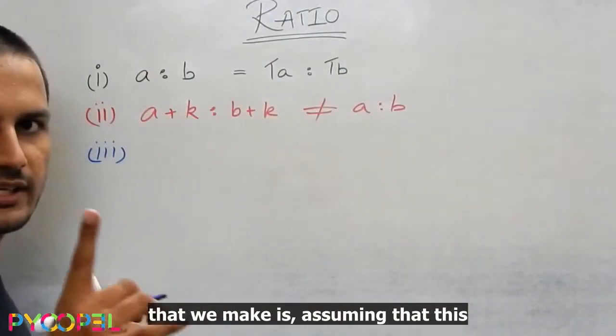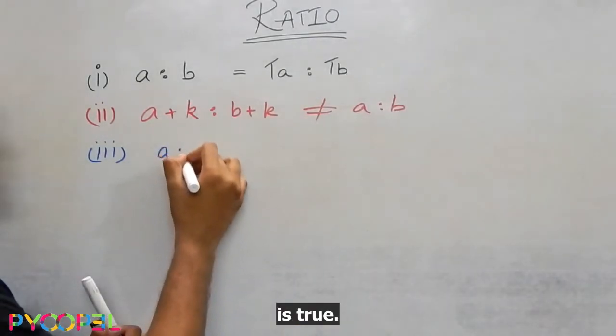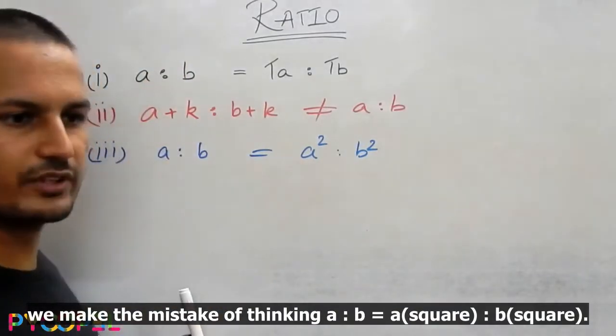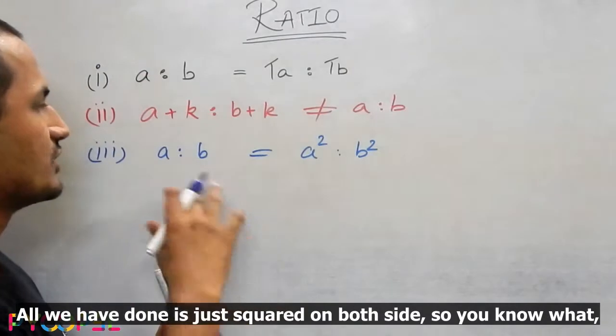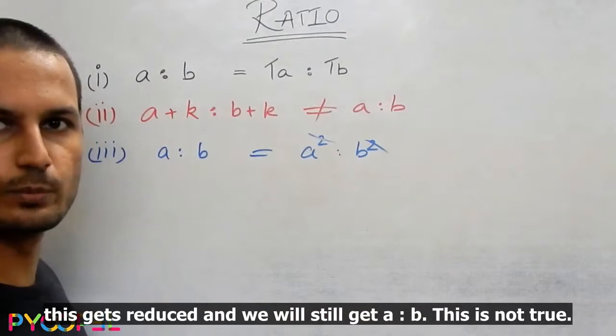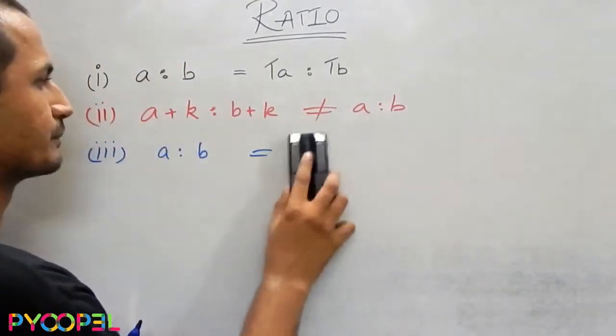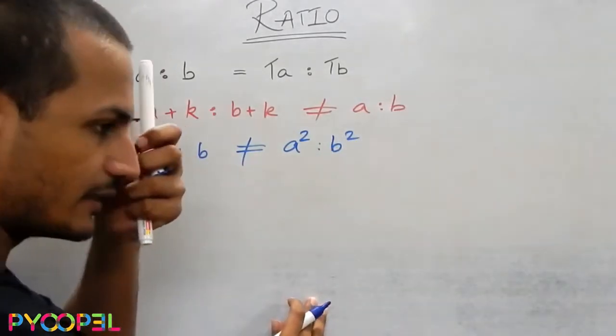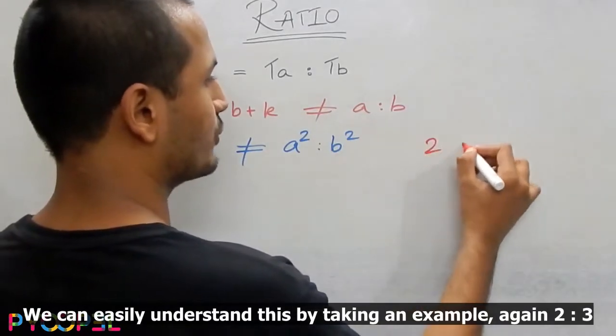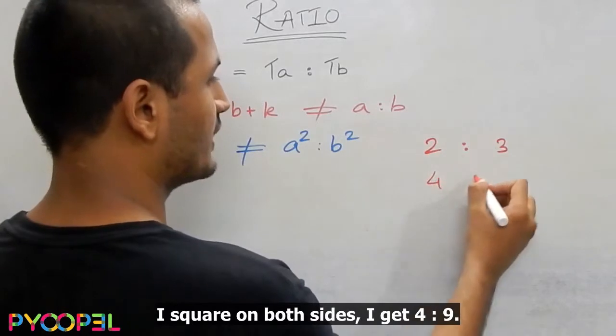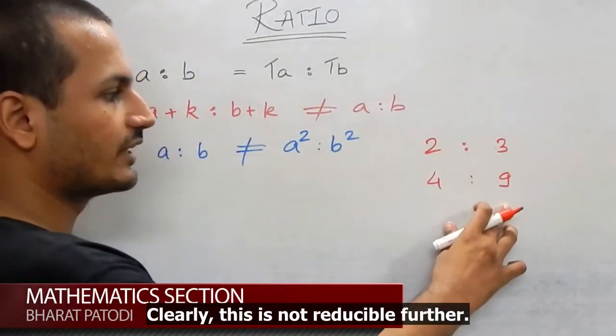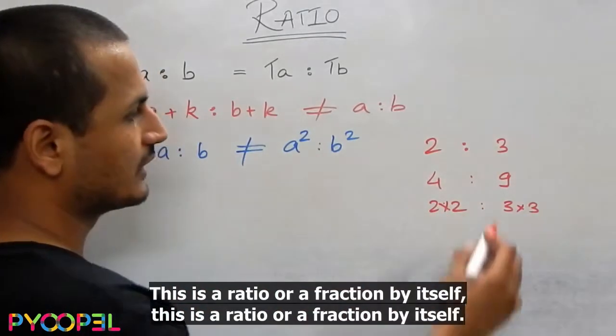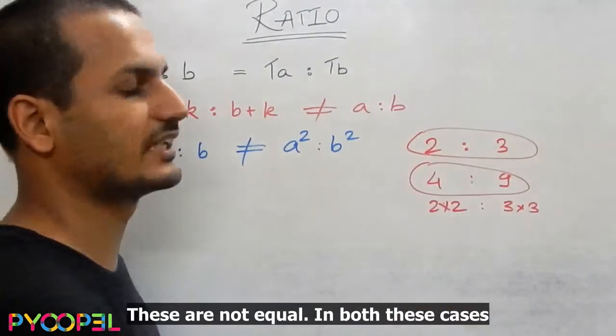Now, one common mistake that we make is assuming that this is true. A lot of times we make the mistake of thinking that A is to B is equal to A square is to B square. All we have done is just squared on both sides. This is not true. A is to B is not equal to A square is to B square. We can easily understand this by taking an example. 2 is to 3. I square on both sides. I get 4 is to 9. Clearly, this is not reducible further.